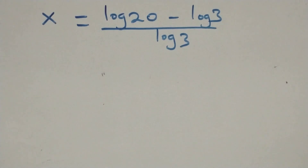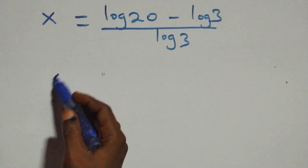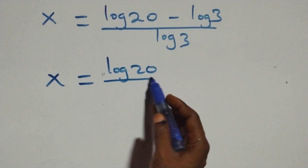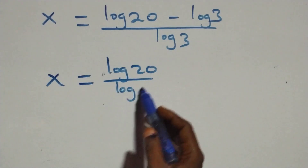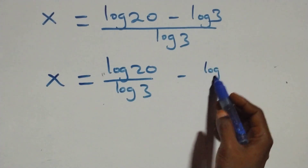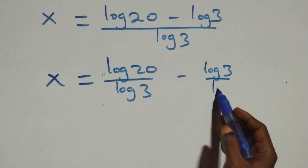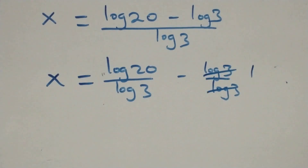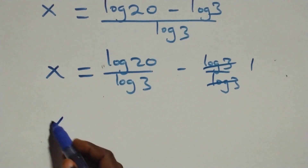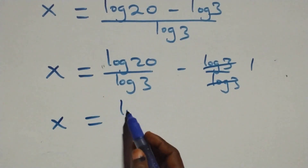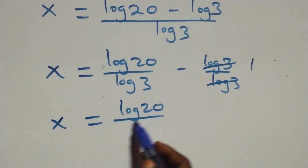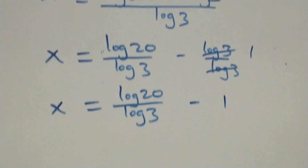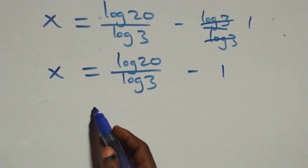What we have here becomes x equals to log 20 minus log 3, over log 3. The next step, we separate this into two fractions and we have x equals to log 20 over log 3 minus log 3 over log 3, which implies that log 3 cancels each other and we have 1 left here.